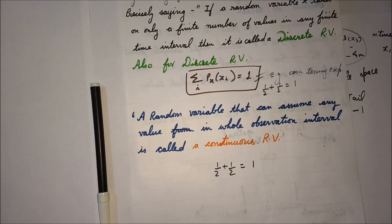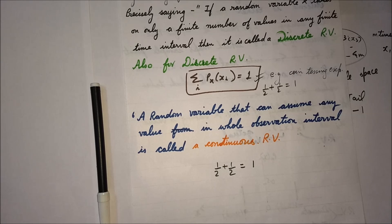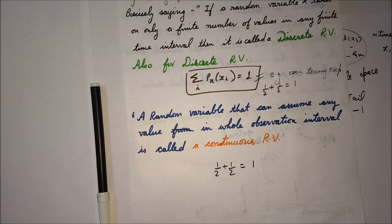This was all about what random variables are and their types. In the next video, I will take one example — but before discussing it, I will explain what CDF is, and then we will see a numerical example of how to build a graph of probability and how to draw the graph for CDF. That's all for today's lecture. Thank you, and please share and subscribe to my channel for further notifications.